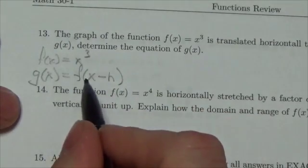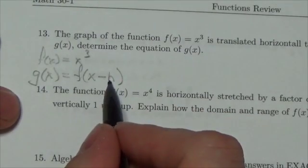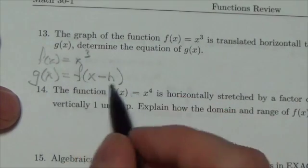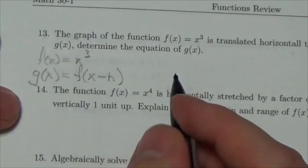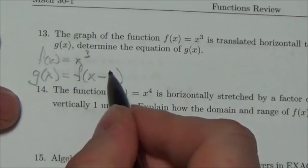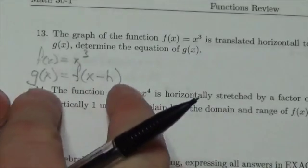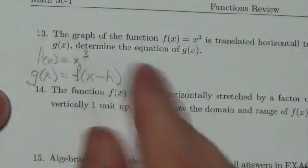So, x minus h. Now, if h is positive, this thing moves to the right. If it's negative, it's going to move to the left. But remember that that negative is going to change the sign on that. So, this is what that's going to look like just when we're trying to identify what that translation does to the function.